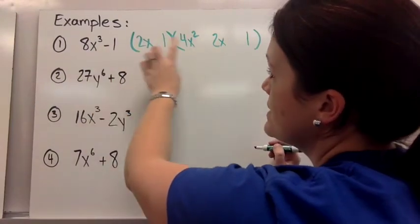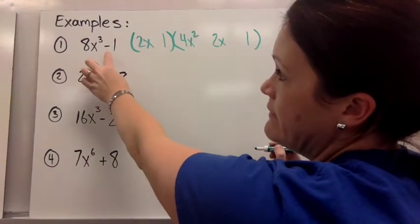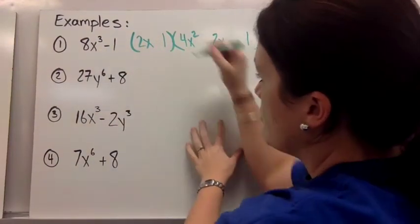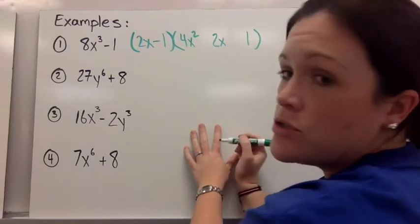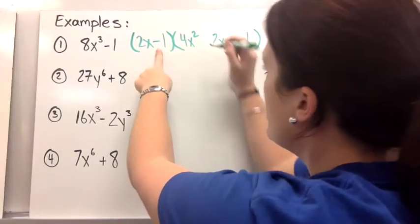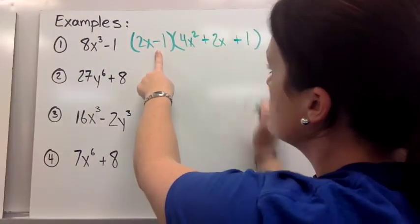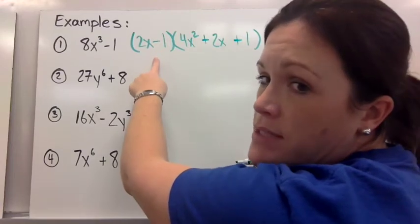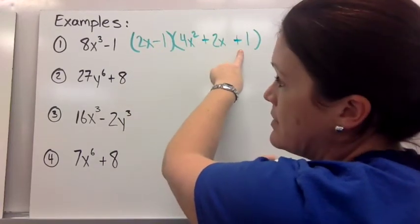And for the last term you square the last term in the binomial. Then my signs are minus, plus, plus, because I was given minus, I start with minus, or you're given a difference, so start with a difference. And then minus, plus, plus, or SOAP, same as I was given, opposite of that, always positive.